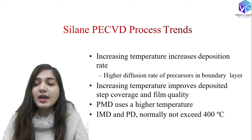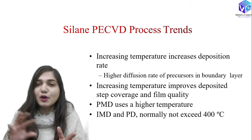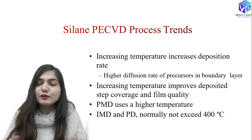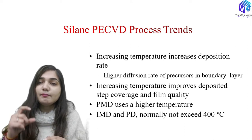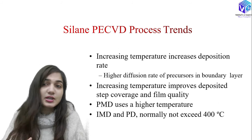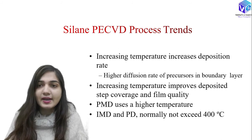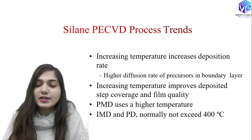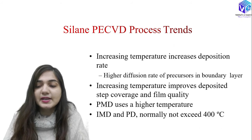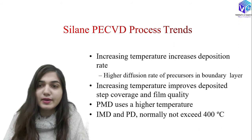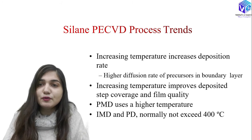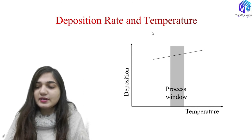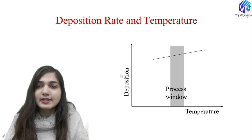At a higher diffusion rate, I will be getting a higher number of molecules of the precursors inside the boundary layer. If I have higher molecules inside the boundary layer, I will be getting a bigger width of the deposition layer, which means the deposition rate would be higher. For PMD we use a higher temperature, whereas for IMD and PD we use around 400 degrees Celsius. You can see the trend of deposition rate with temperature — as temperature increases, deposition rate increases linearly inside the process window.